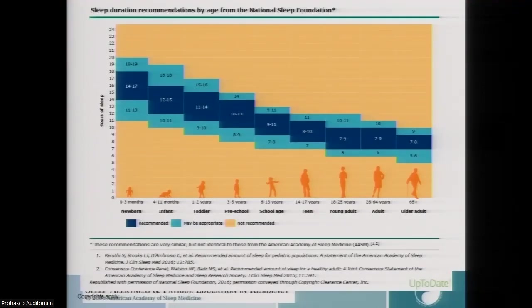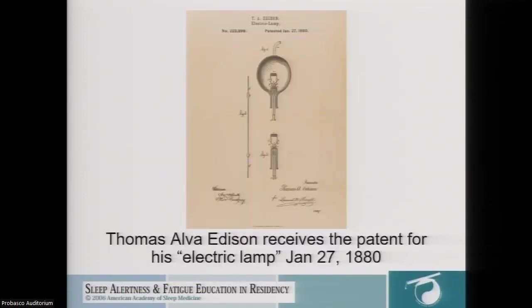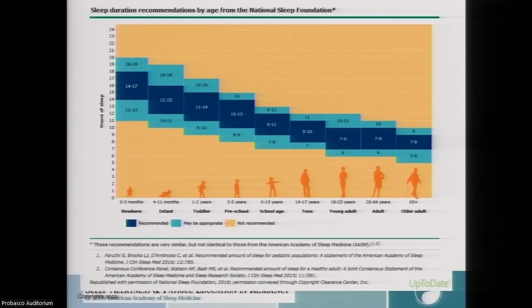How much sleep do we need? It changes throughout your life. Neonates need much more sleep than the elderly. Once you get to about 18 years old, it's pretty much set for the rest of your life. Seven to nine hours — let's call it eight hours — is pretty typical throughout your adult life. If you start getting below six hours, that's a sign something is wrong.